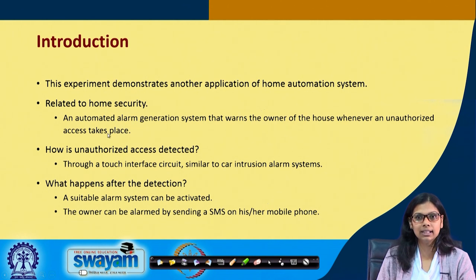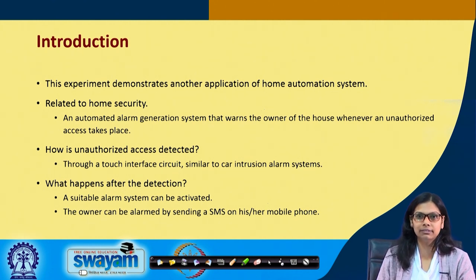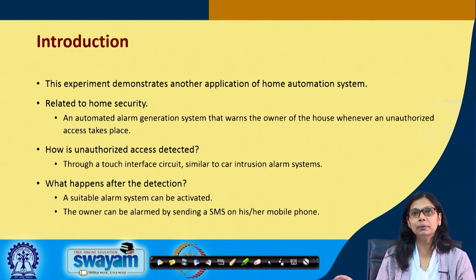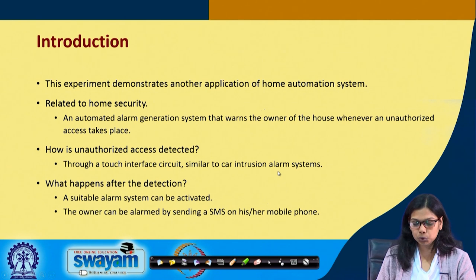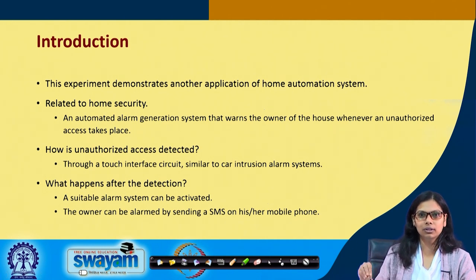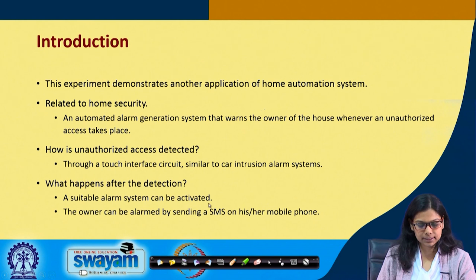Whenever unauthorized access takes place, it will send an SMS. You have to make your system such that if you are sleeping at night and receive an SMS and do not respond, the alarm system should make other persons know that something is happening in your house. The unauthorized access is detected through a touch interface circuit, which is similar to a car intrusion alarm system — somebody touches your car and an alarm sounds. After detection, a suitable alarm system can be activated and the owner can be alerted by SMS on his or her mobile phone.